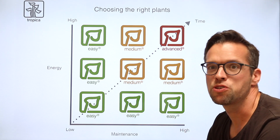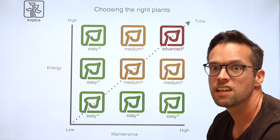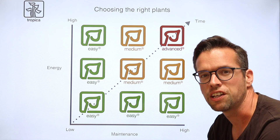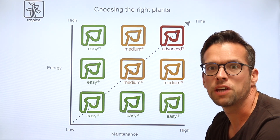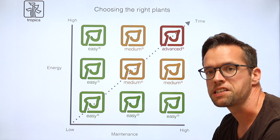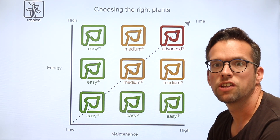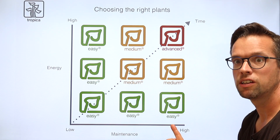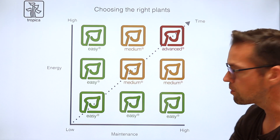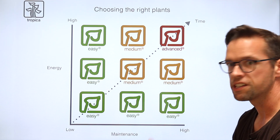We have created a matrix that helps you choose the right plants for your aquarium. On the vertical axis we have the amount of energy required, from low to high. Energy levels refer to light levels, nutrition and CO2. On the horizontal axis we have maintenance levels from low to high. Maintenance levels can be defined in terms of their complexity, i.e. plant trimming, replanting and maintenance. As you can see from the matrix, the larger the energy level and maintenance level, the longer the time required to achieve success. The plant categories range from easy to medium to advanced as the parameters for energy and maintenance increase.